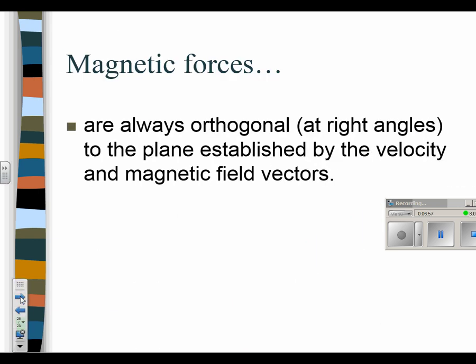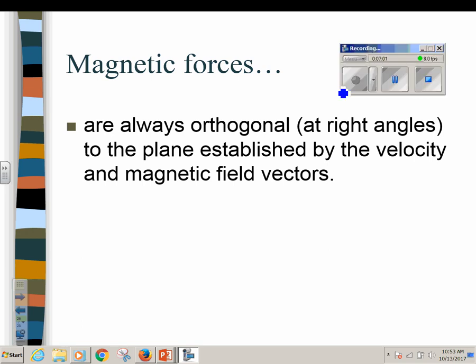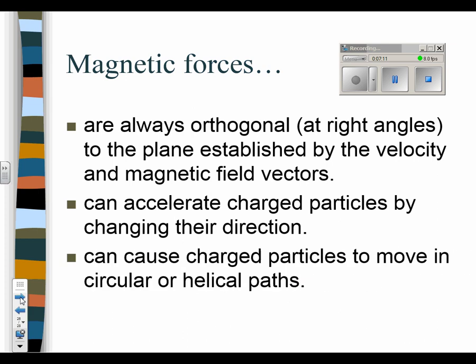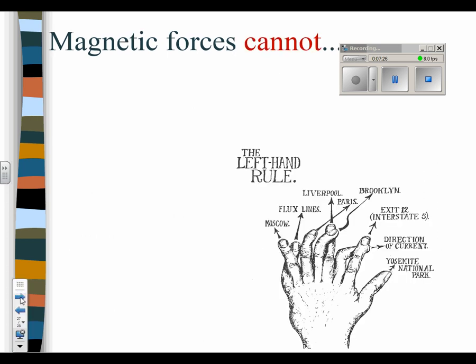So magnetic forces are always orthogonal or at right angles to the plane established by the velocity in the magnetic field vectors. They can accelerate charged particles by changing their direction. Remember, if a velocity changes direction then it is accelerating. And they can cause charged particles to move in a circular or a helical path. All right? So we've done number 7 and 8, and this is actually number 10. Okay, what they can and can't do.